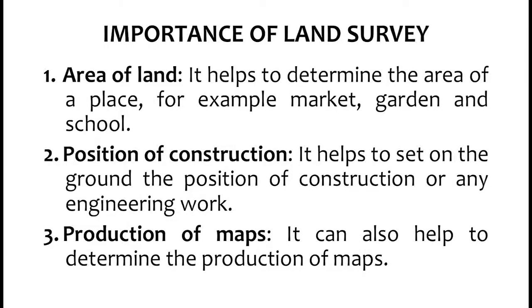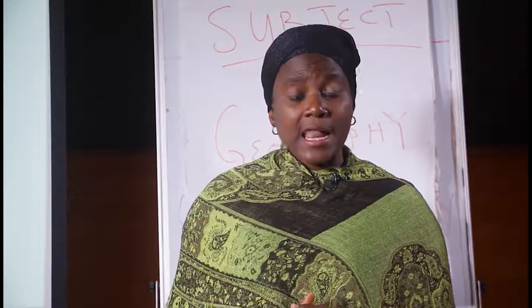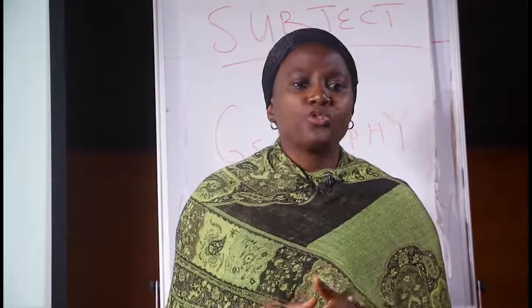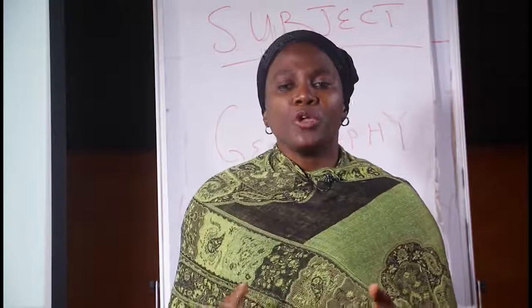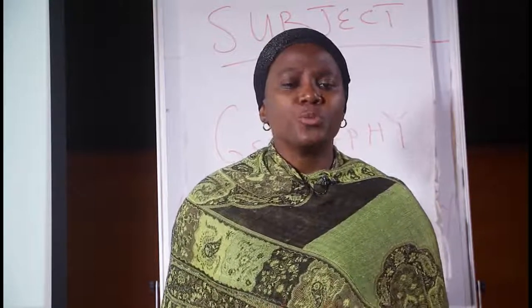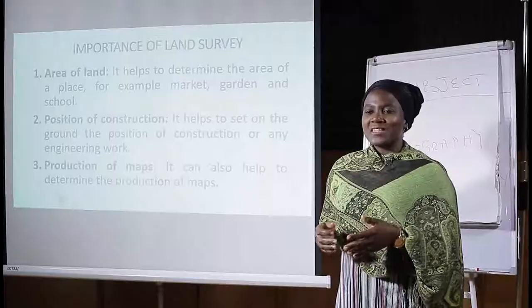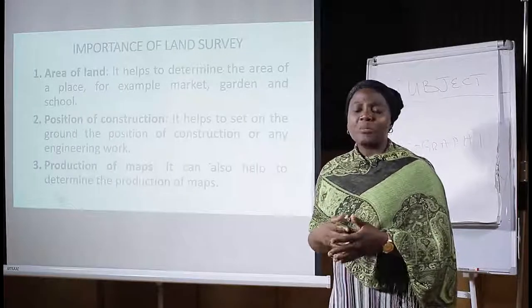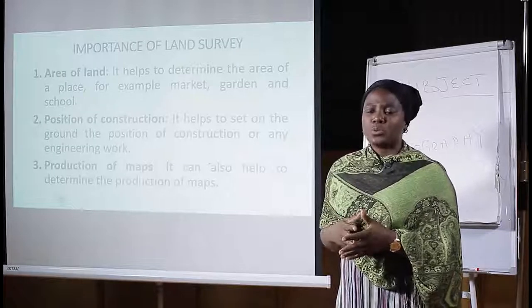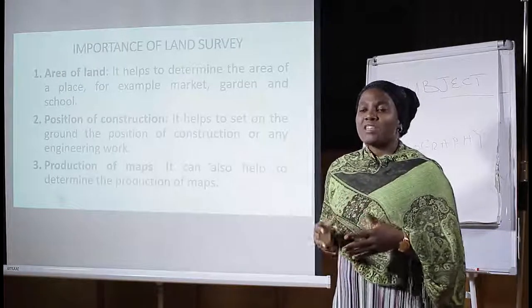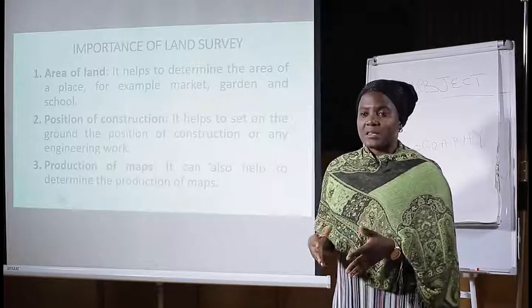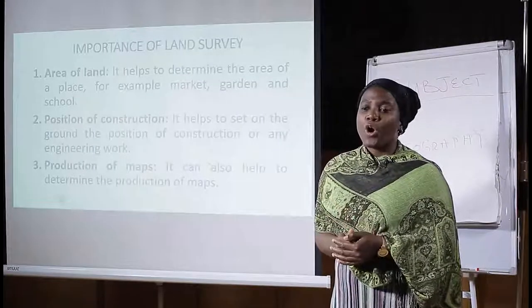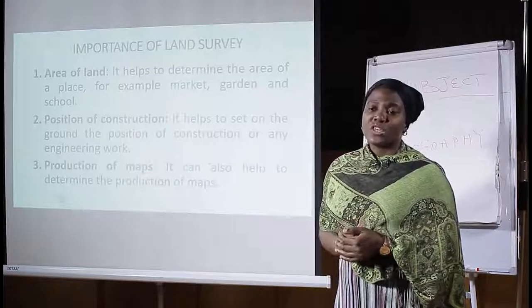Number two, position of construction. It helps to set on the ground the position of construction or any engineering work. Land is available, and you have decided what you're going to build on the land. For example, you have a piece of land and you want to build a house. The position or where the house is placed on the land has to be determined. This is part of the work of a land surveyor through the process of surveying.